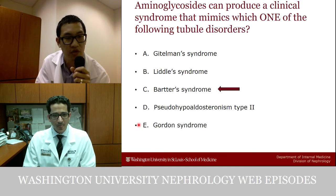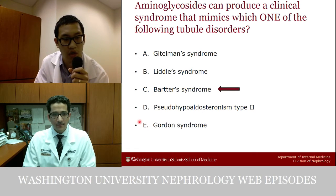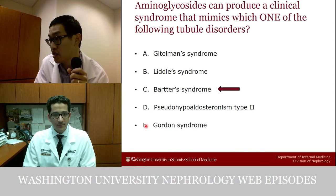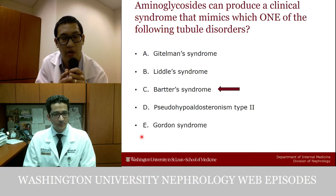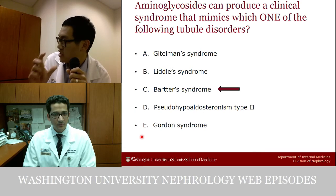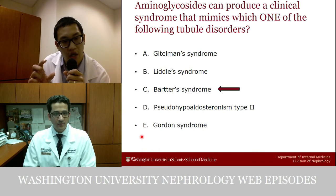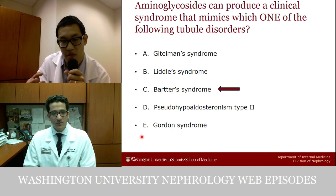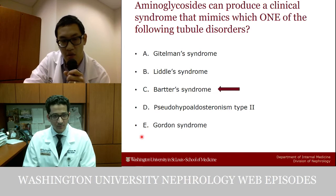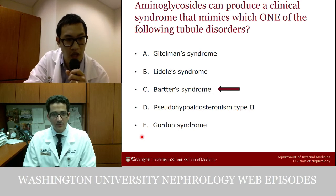Even if you didn't know the answer, you could eliminate D and E because they're the same. Aminoglycosides can cause a Bartter-like syndrome because on the basolateral side of the thick ascending limb there is a calcium-sensing receptor, and aminoglycosides — being polyvalent cations — can activate that calcium-sensing receptor, leading to a Bartter-like syndrome.